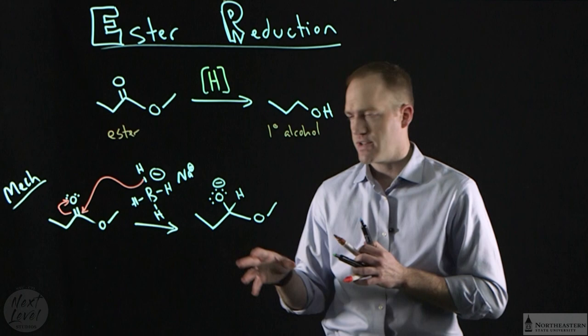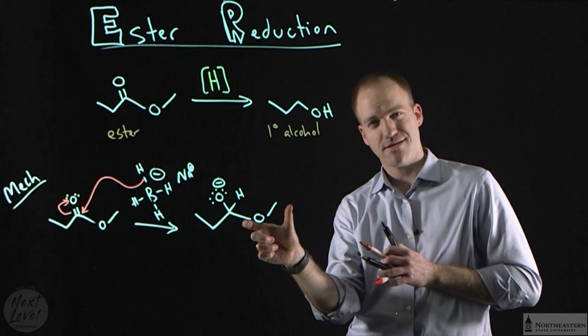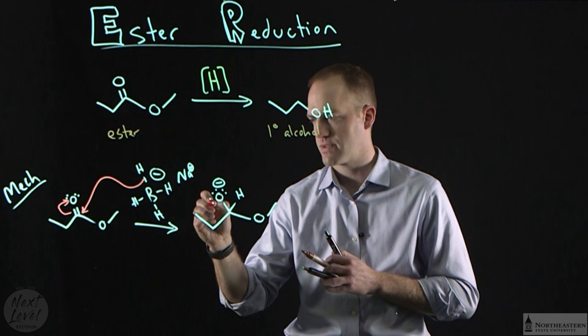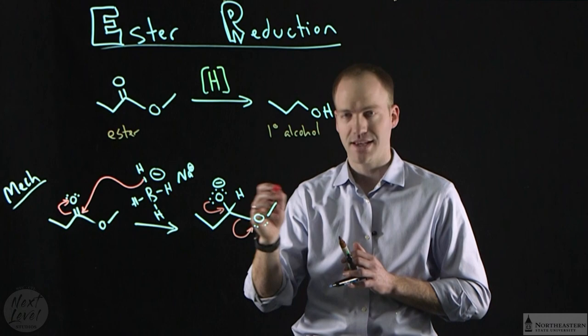Now this tetrahedral intermediate has a couple different options. If this was an aldehyde or ketone, I would just protonate this and have my alcohol right away. But since I have this other group here, which is kind of an ether at this point, I have a leaving group that's present. And so this tetrahedral intermediate can collapse, the electrons come back down from the oxygen and I can kick off this other oxygen species. So I break that carbon-oxygen bond. This is only possible because I have this leaving group built into my system.